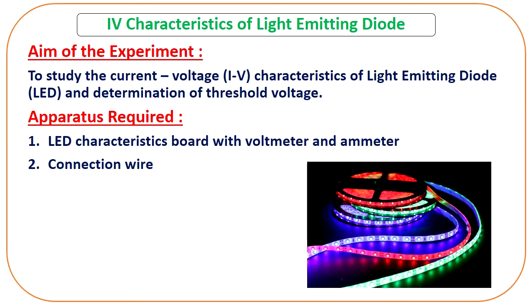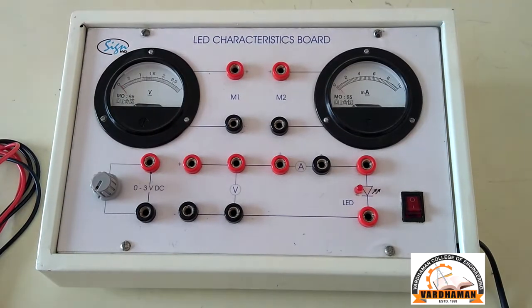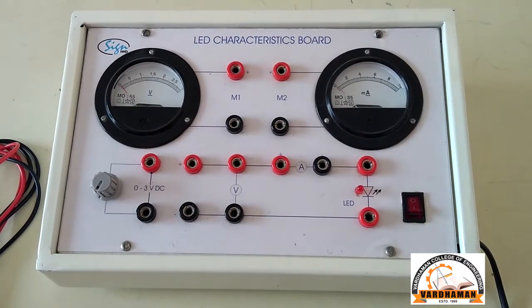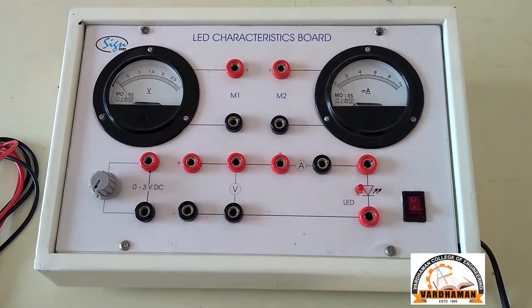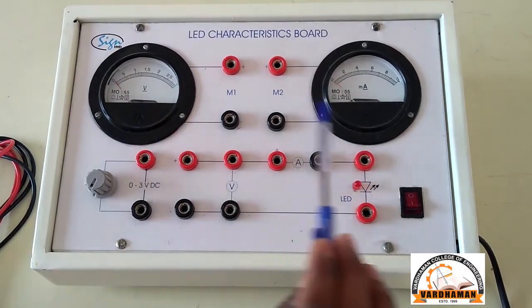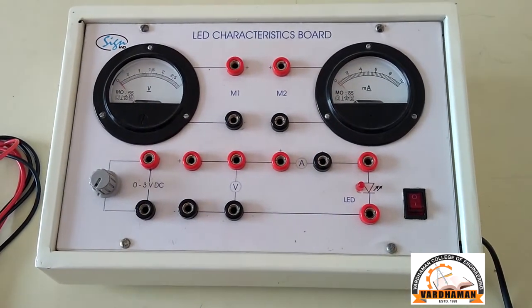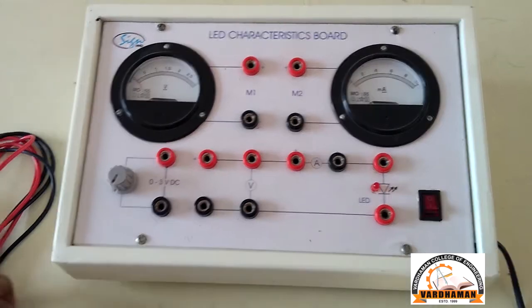For this experiment, the apparatus required includes a LED characteristic board. Here we can see there is a voltmeter and milliammeter, and these are the connecting wires.